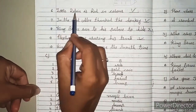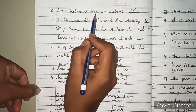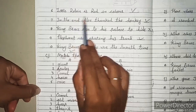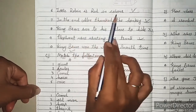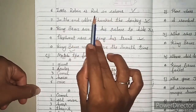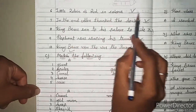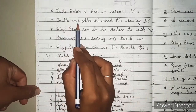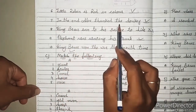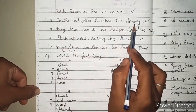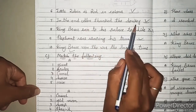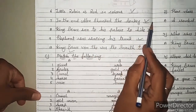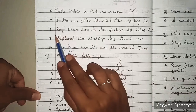6. Little Robin was red in color. Little Robin का color red था? तो क्या आएगा? Right. 7. In the end, Abu thanked the donkey. Last में Abu ने donkey को thank बोला था? तो क्या आएगा? Right.